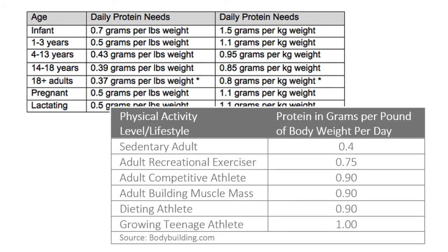Teen athletes need even more than adult athletes, and babies, toddlers, and pregnant or breastfeeding women need even more protein per body weight than teen athletes. Studies have shown that most Canadian adults eat about 100 grams of protein per day, or roughly twice the recommended amount. Even on a vegan diet, people can easily get 60 to 80 grams of protein throughout the day from foods like beans, legumes, nuts, broccoli, and whole grains.